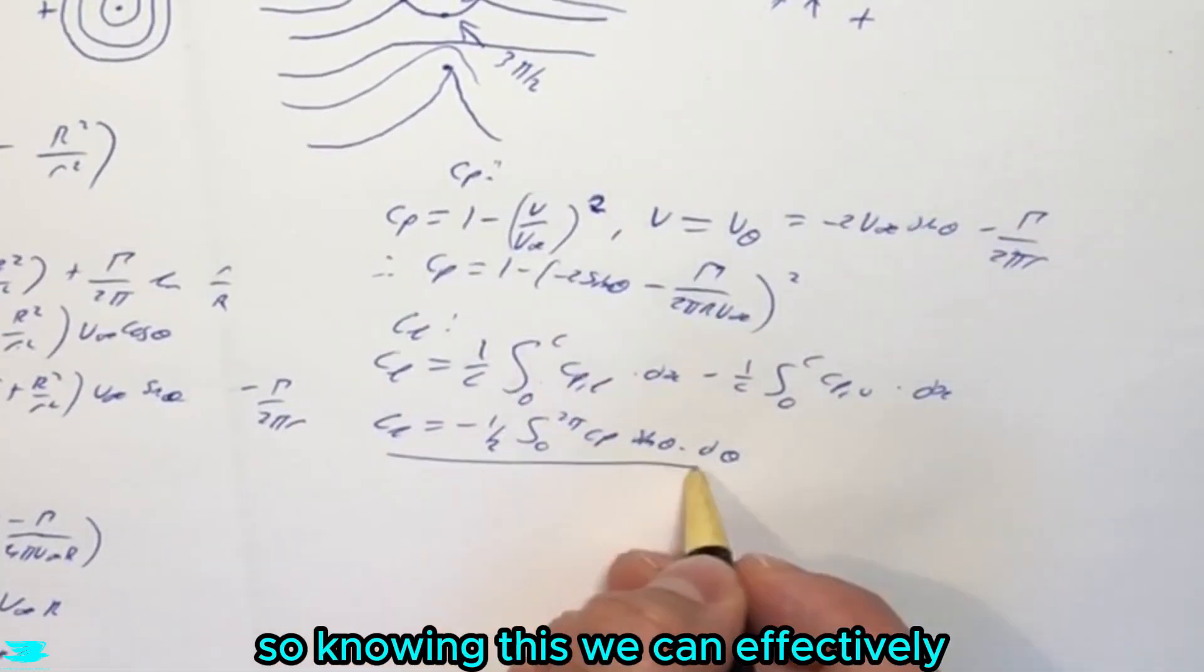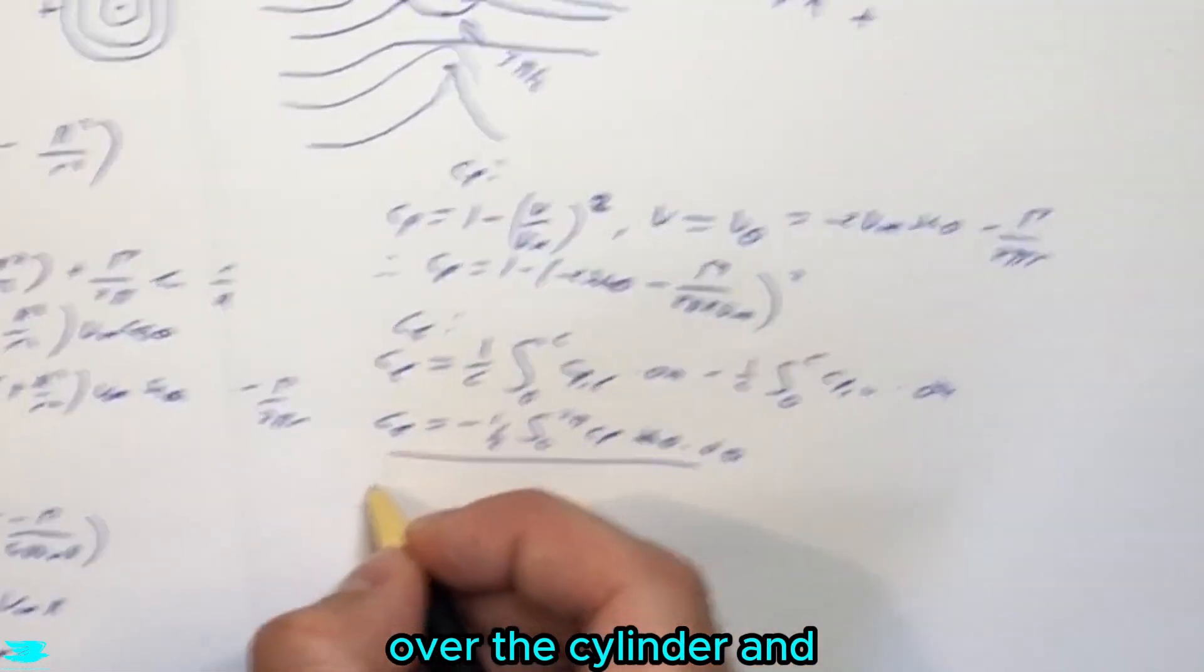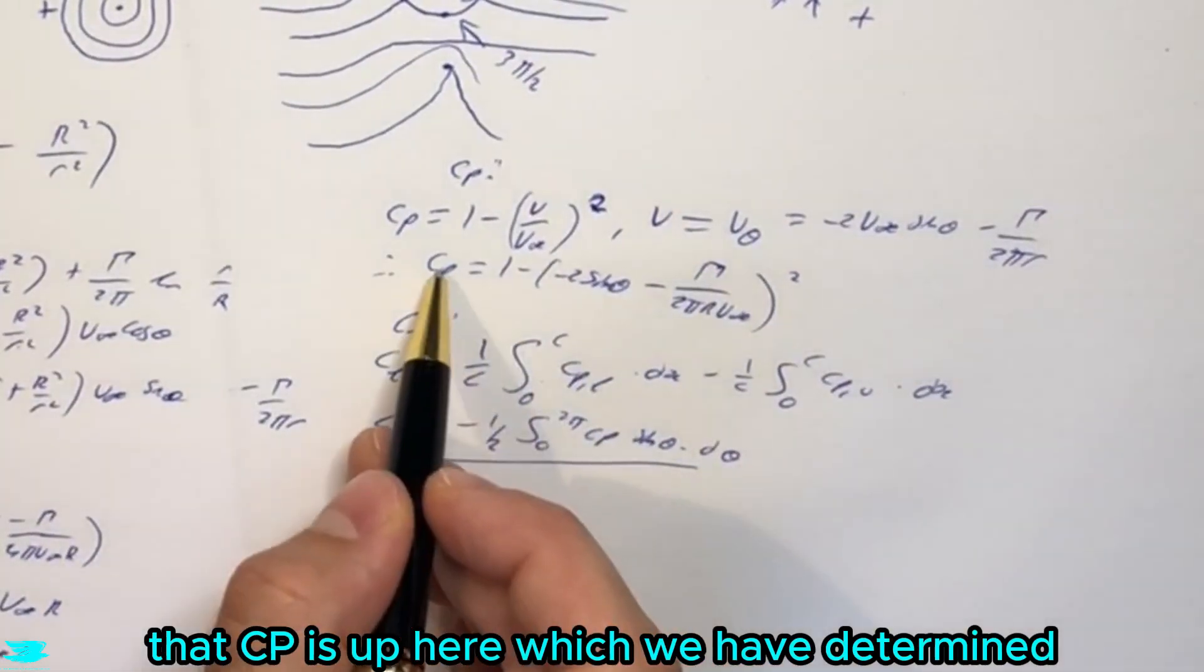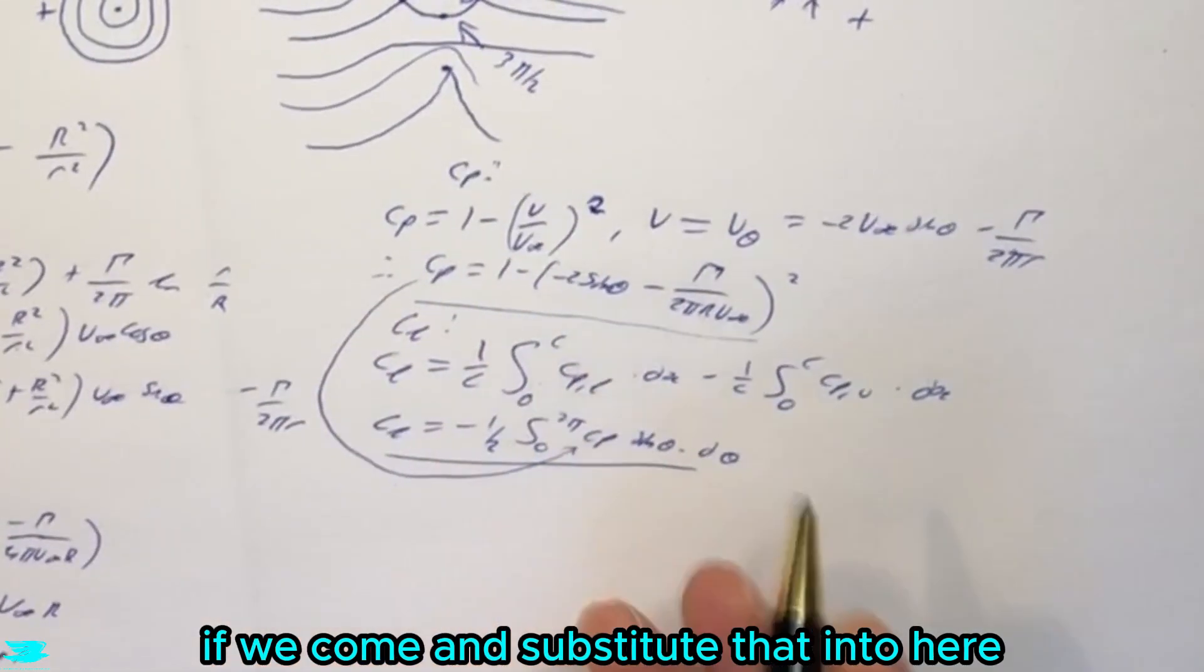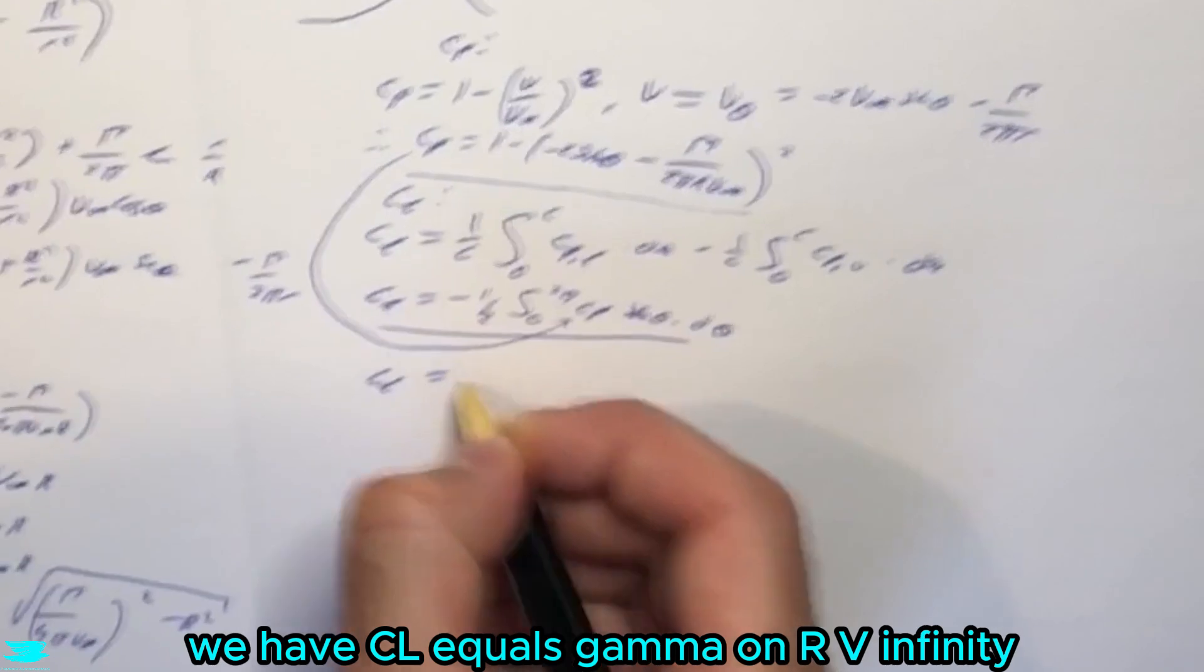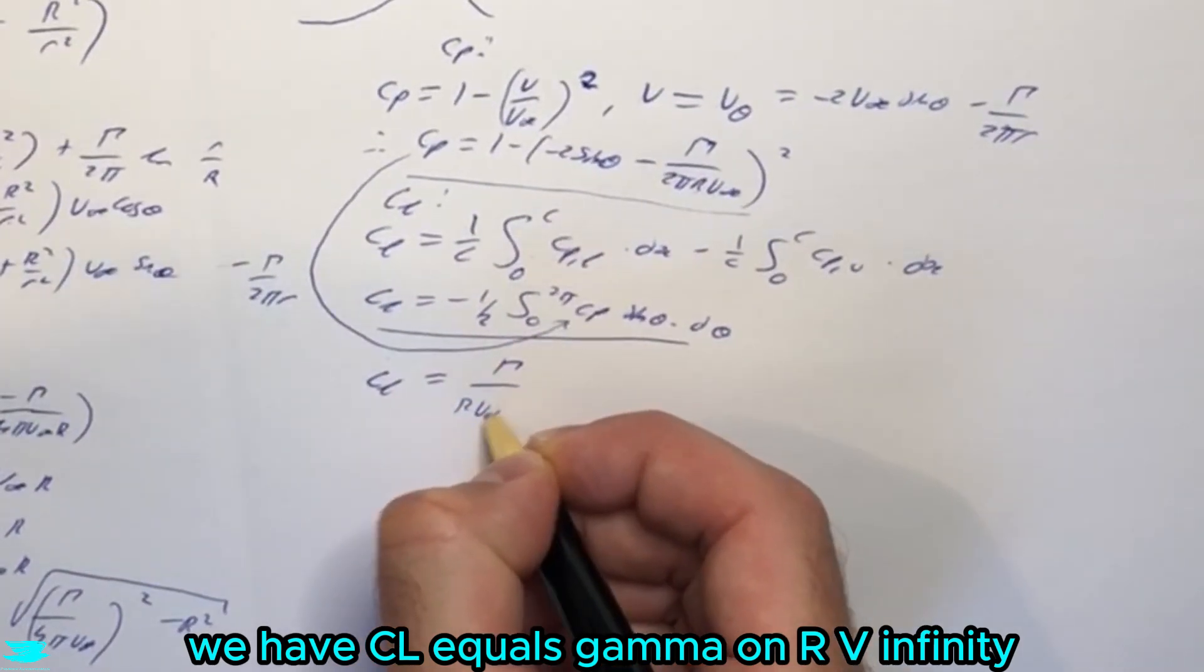So knowing this, we can effectively determine what the pressure, the lift coefficient is over the cylinder. And that CP is up here, which we've determined, if we come and substitute that into here, and just work it out, we have CL equals gamma on R, V infinity.